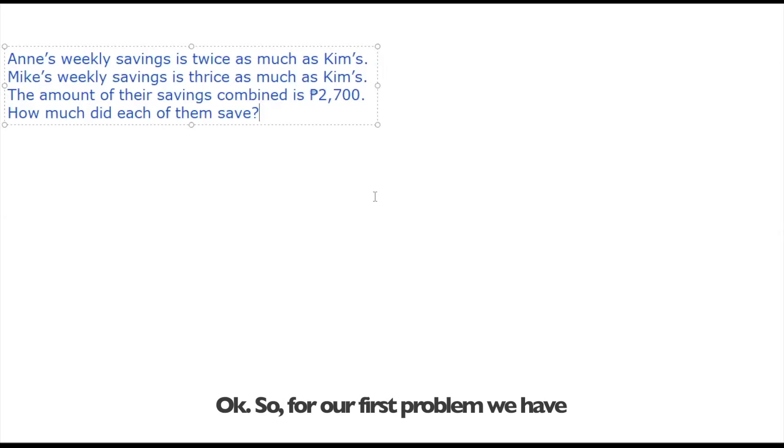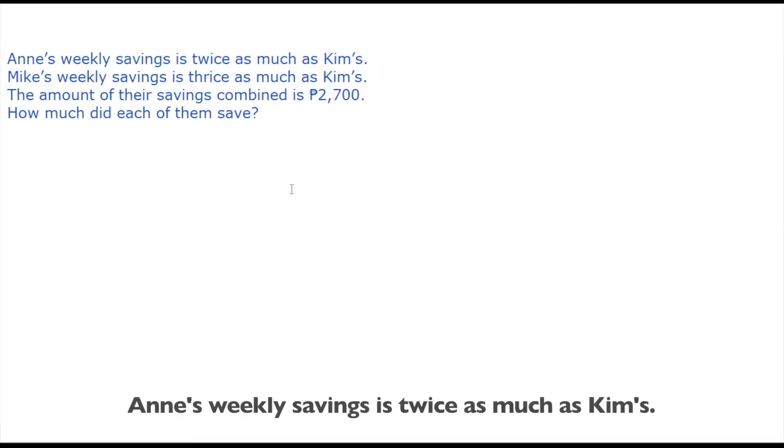So for our first problem we have Ann's weekly savings is twice as much as Kim's and then Mike's weekly savings is thrice as much as Kim's. The amount of their savings combined is 2,700 pesos. How much did each of them save?